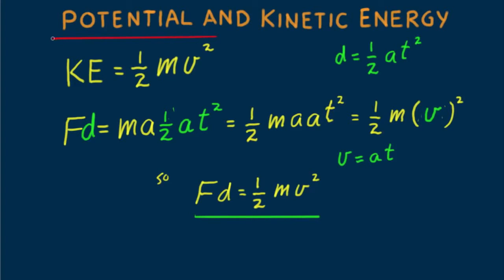That equation tells us that work done equals the gain in kinetic energy. I derive this only to show that kinetic energy is the outcome of concepts we've studied before. For the time being, know that kinetic energy equals one half mv squared — learn what you need to know without overloading yourself all at once.